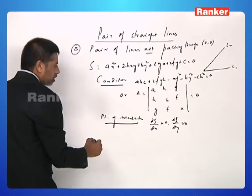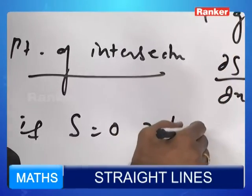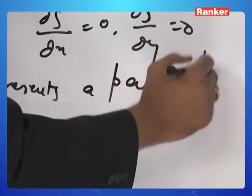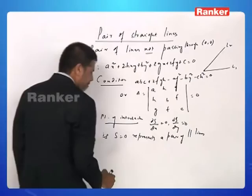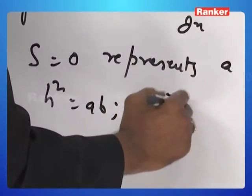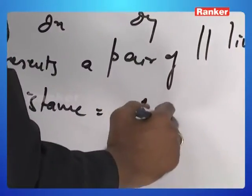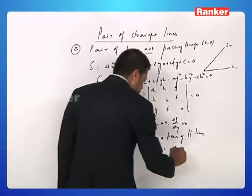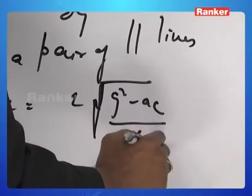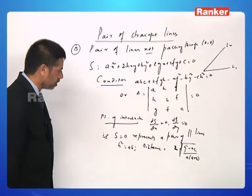Then if S equals 0 represents a pair of parallel lines, the condition h squared equals ab will be satisfied, and the distance between the parallel sides will be 2 root g squared minus ac by a into a plus b. This will be the distance between the parallel sides.